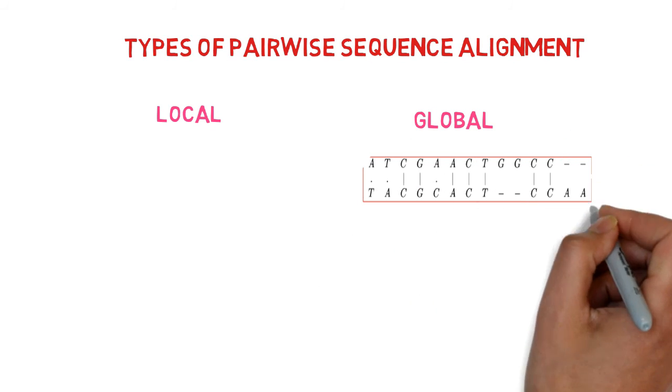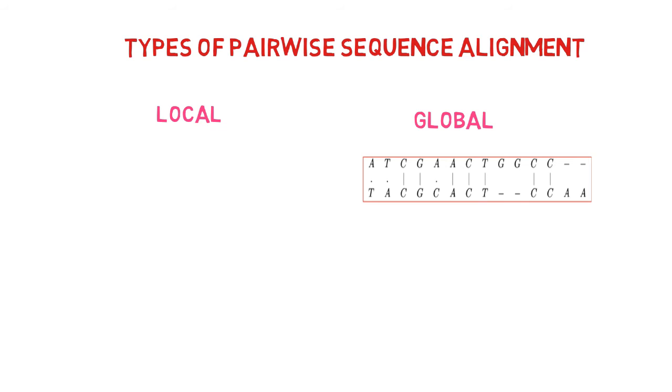By introducing gaps, global alignment increases the number of sequence matches along the entire length of two sequences.